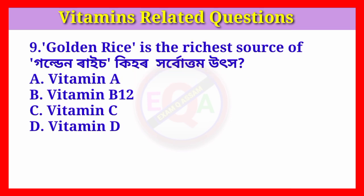Question number nine: Golden rice is the richest source of which vitamin? Answer: Option A, vitamin A.